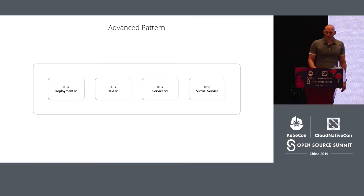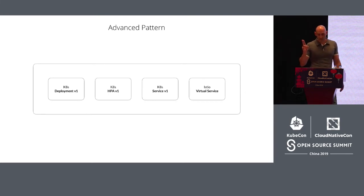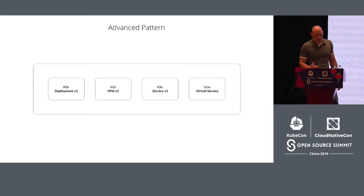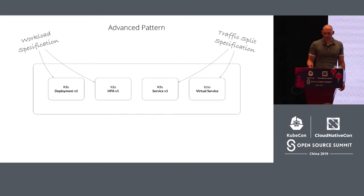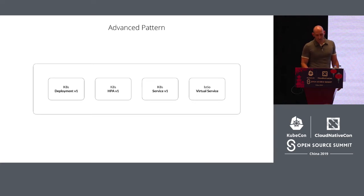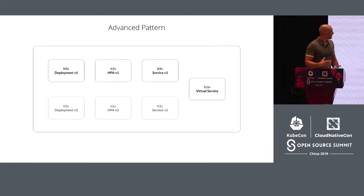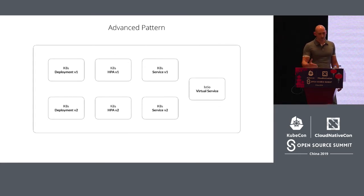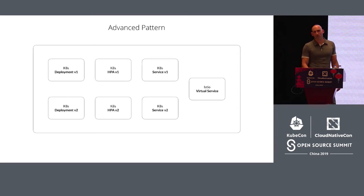To grant the developer full control over the traffic split specification, a more advanced pattern emerged. Here, one microservice is represented by composing four different kinds of objects: a Kubernetes Deployment, a Kubernetes Horizontal Pod Autoscaler, a Kubernetes Service, and an Istio Virtual Service. Deployment and HPA represent the workload specification. Service and Virtual Service represent the traffic split specification. In order to release the initial revision, the developer creates a Deployment object, a Horizontal Pod Autoscaler object, a Service object, and an Istio Virtual Service object. In order to release a subsequent revision, the developer has to create a new Deployment, a new HPA, a new Service, and update the existing Istio Virtual Service.